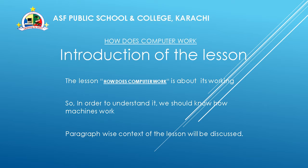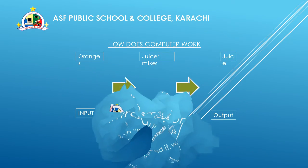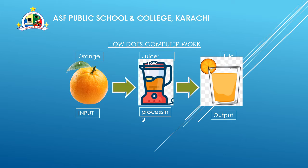Let's start with an example. As you can see in this example, the first step is that you put the oranges in the juicer. Oranges are the input you give to the juicer. In the first step, you will see that you have oranges, and you input them into the juicer.